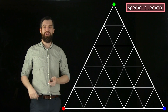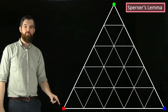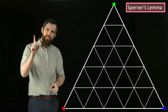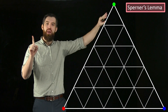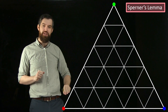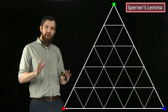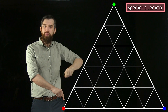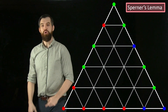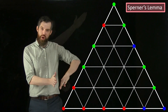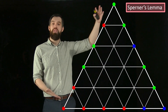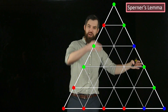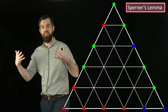All the different vertices in this triangulation, I want to color them. Let's do the big outer corner points first: I'm going to put red down here, green up at the top, and blue down on the far right. Along the edge between red and green, I want to put only reds and greens. Along the bottom, only reds and blues between red and blue. And along the far right, only greens and blues between green and blue.